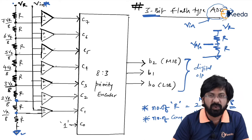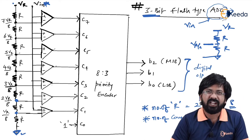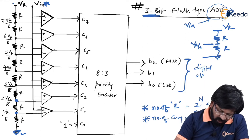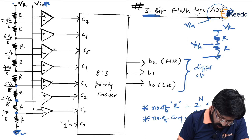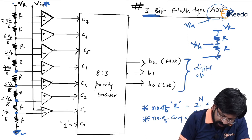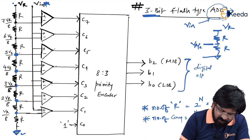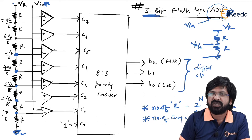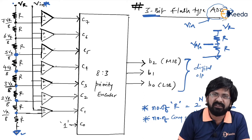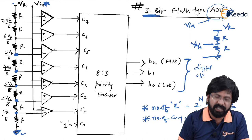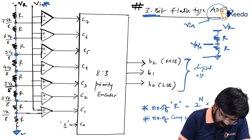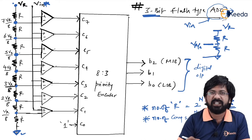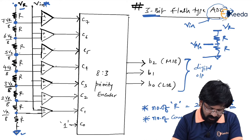Measuring from ground: across one resistor you get VR/8; across two resistors it is 2VR/8; across three resistors it is 3VR/8, then 4VR/8, 5VR/8, 6VR/8, 7VR/8, and finally 8VR/8 which equals VR. So the voltage divider produces equally spaced reference voltages.